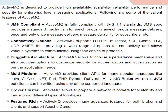It has a pluggable architecture. ActiveMQ allows you to choose a persistence mechanism and also provides options to customize security for authentication and authorization as per application needs. It supports multi-platform: ActiveMQ provides client APIs for many popular languages like Java, C, C++, .NET, Perl, PHP, Python, Ruby, and more. The ActiveMQ broker runs in a JVM, but clients can be written using any of the supported languages.